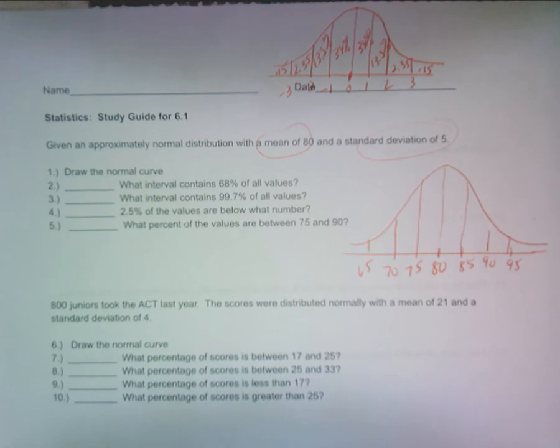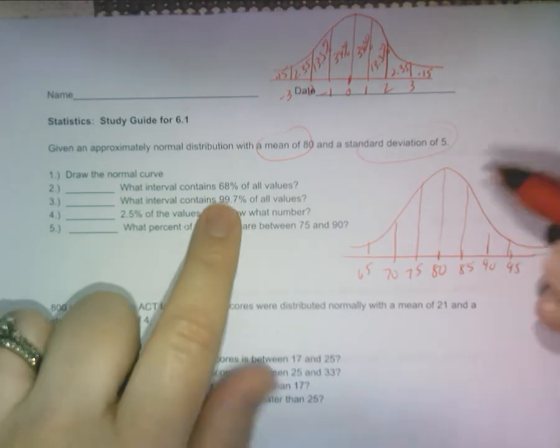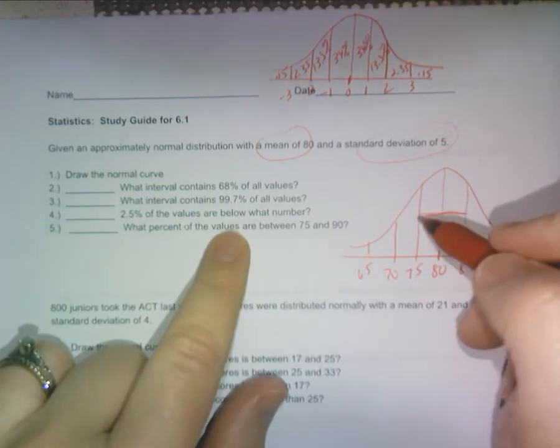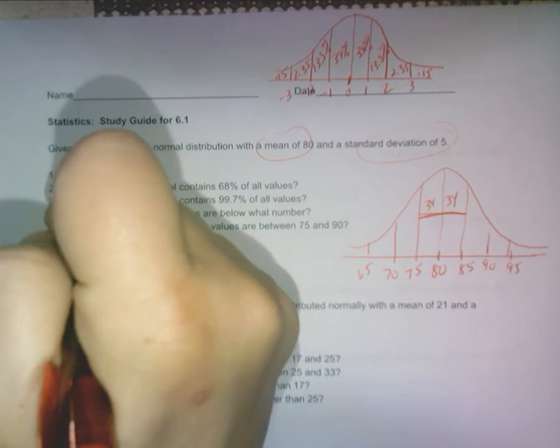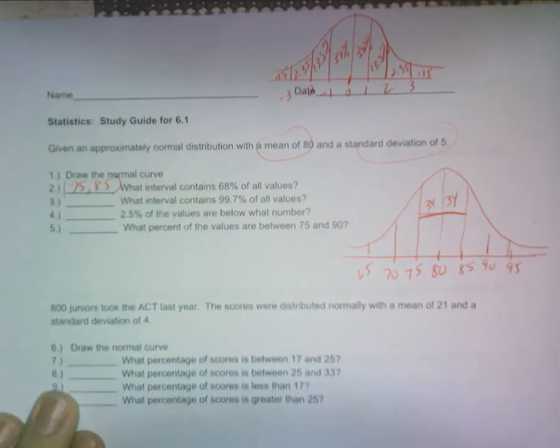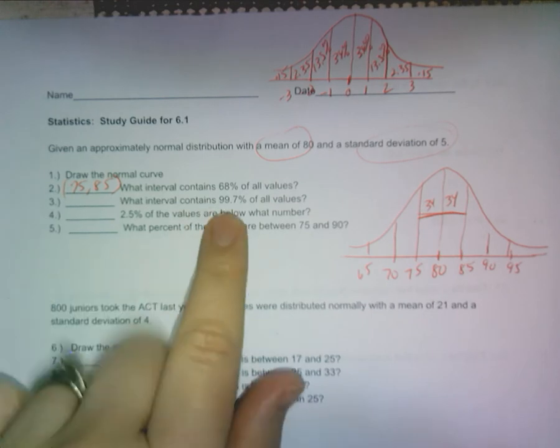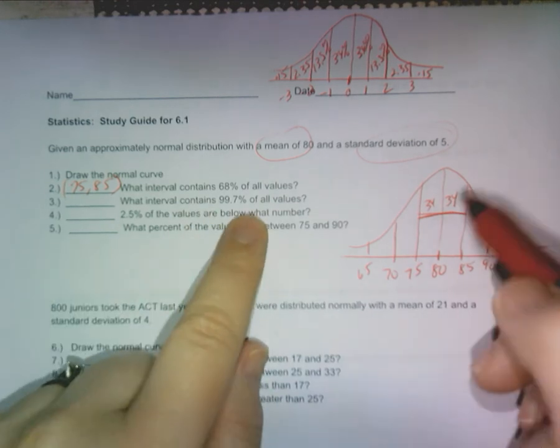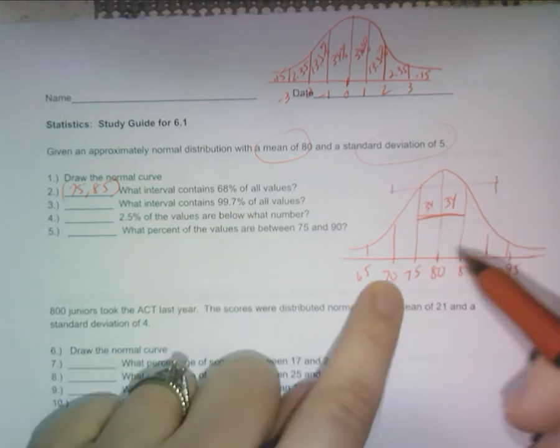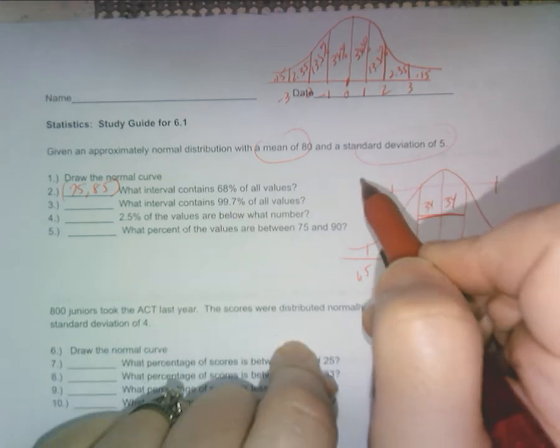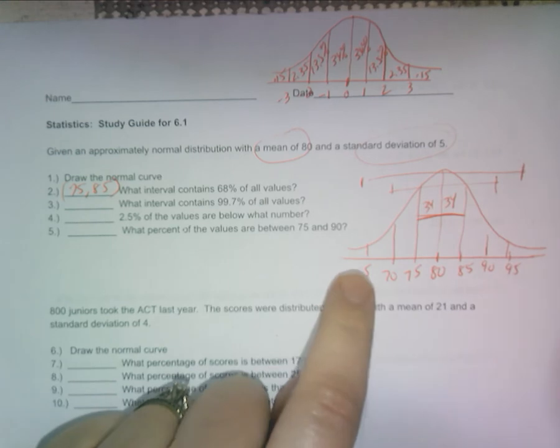What is the interval that contains 68% of your values? Well from here to here is 68%, 34 and 34, so the interval would be 75 comma 85. Do you have that? You're brilliant. What interval contains 99.7% of your values? This would be 95% in your second standard deviation. 99.7% is to your third standard deviation, so from 65 to 95.